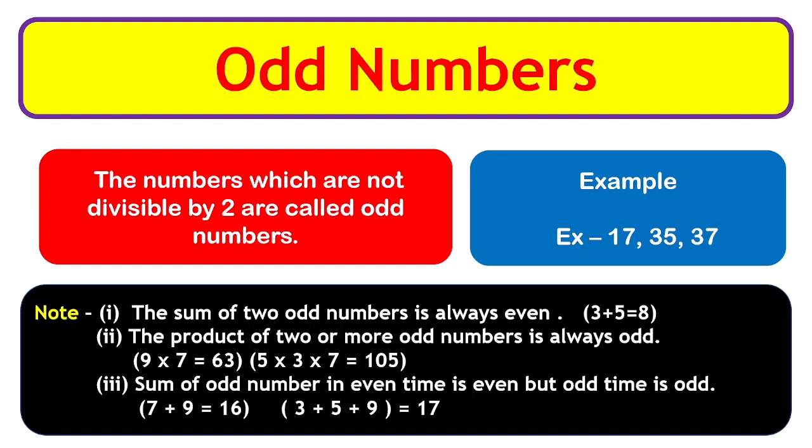When we multiply 5 by 3 by 7, we get 105, which is also odd. The sum of odd numbers added an even number of times is even, but added an odd number of times is odd. For example, 7 plus 9 equals 16, which is even. And 3 plus 5 plus 9 equals 17, which is odd.